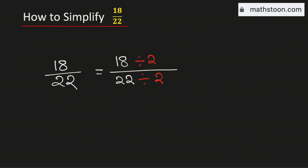And by doing so, we will get 9 over 11. Now look that 1 is the only common divisor of 9 and 11. Therefore, this fraction cannot be simplified further. So 18 over 22 simplified is equal to 9 over 11. And this is our final answer.